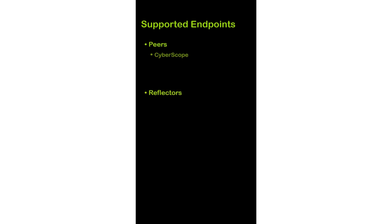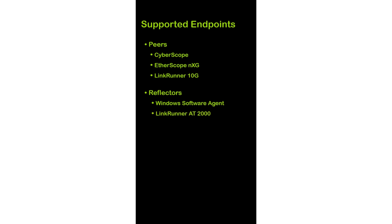Peers include the Cyberscope, Etherscope NXG, and the LinkRunner 10G. A Windows-based software agent, the LinkRunner AT2000, or the LinkRunner G2 are reflectors. A peer or reflector is required to run a performance test.